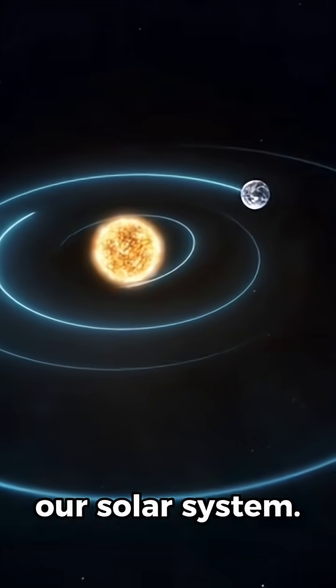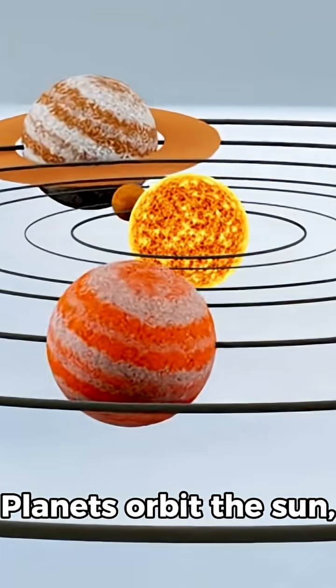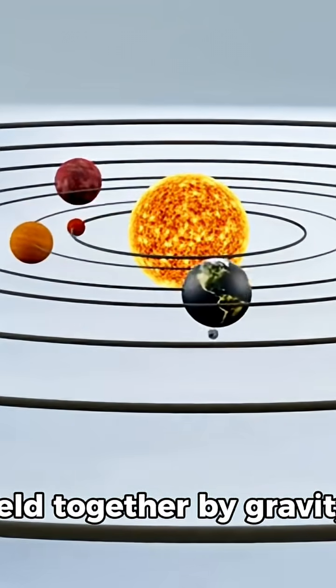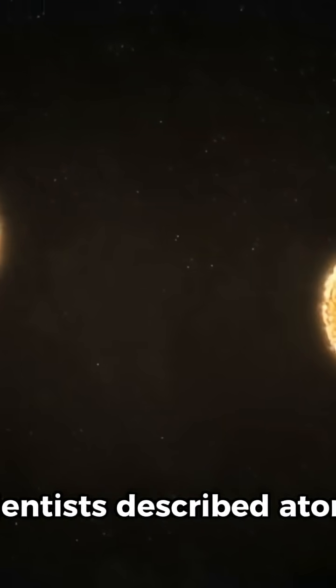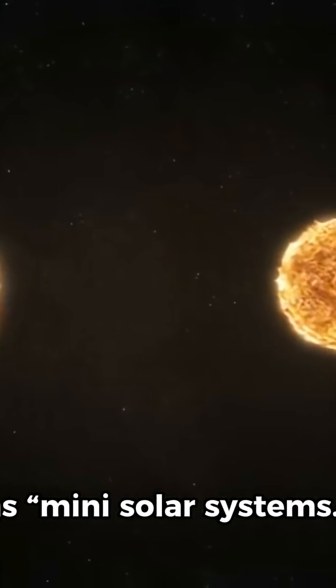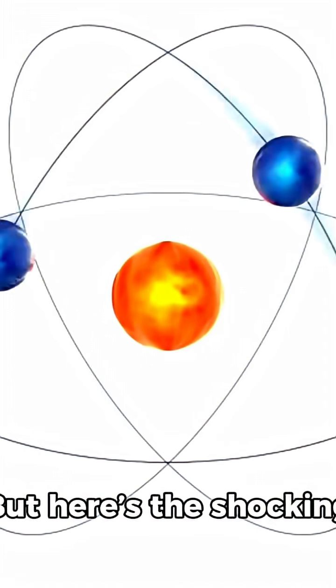Now compare this to our solar system. Planets orbit the sun, held together by gravity. The patterns are so eerily similar that early scientists described atoms as mini-solar systems. But here's the shocking truth.